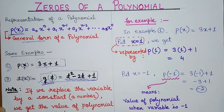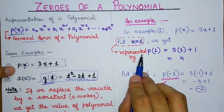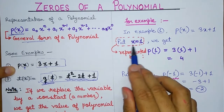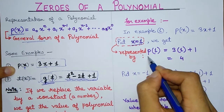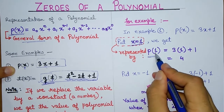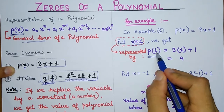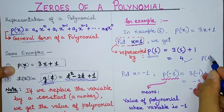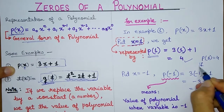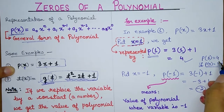For Example 1: P(x) = 3x + 1. If you put x = 1, this is represented as P(1). P is the polynomial's name and 1 indicates that we have replaced the variable with 1. So only the variable x gets replaced by 1. P(1) = 3(1) + 1 = 4. So P(1) = 4.